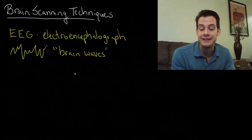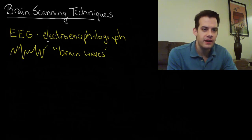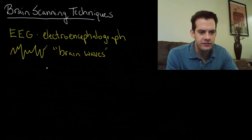We'll see some examples of this when we talk about sleep in the future. The EEG was used to first identify the different stages of sleep that we go through. Okay, so that's the EEG.